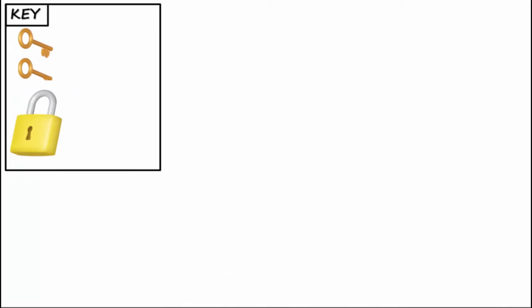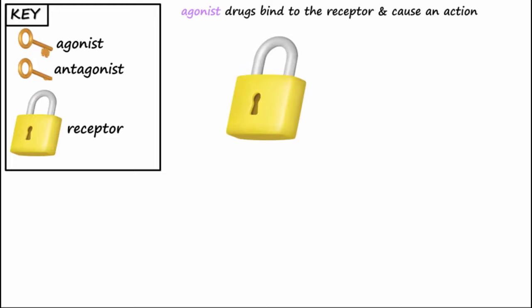Let's use a lock and key analogy to understand the difference between an agonist and an antagonist. In this scenario, the lock represents the receptor, and the agonist drug or antagonist drug represents different keys that fit into the lock. Agonist drugs bind to the receptor and cause an action. In this scenario, they fit into the keyhole of the lock and then cause an action, which is opening the lock.